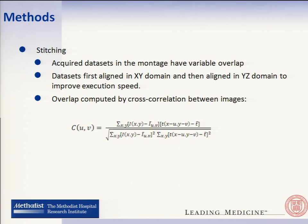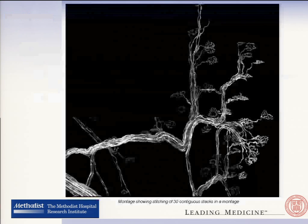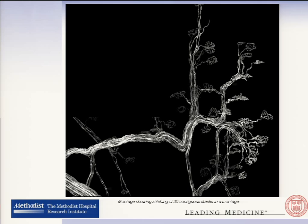Last, the stitching process. Once the axons have been tracked in all the data sets, the step is to put them all together and find the big picture. There are two ways of doing this: 2D and 3D. In the 3D method there are far more points to search to find the alignment point, so we use a two-dimensional approach — we take the MIP image and match them together in the XY domain first, and then align them in the Z direction. This improves the execution speed.